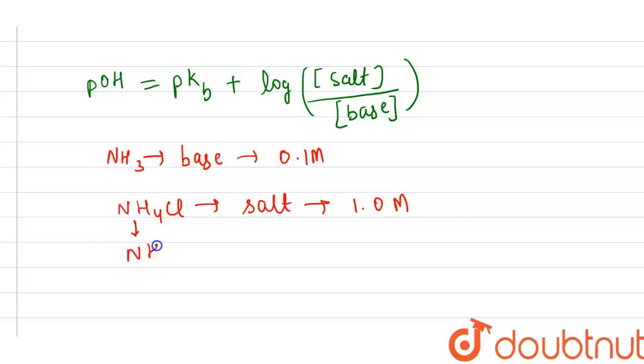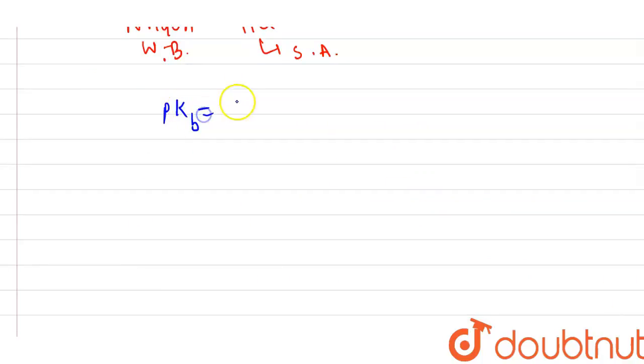As we know, it is a salt and its value is 1 molar. It is a salt of ammonium hydroxide, which is a weak base, and HCl, which is a strong acid. Now, we have given pKb of ammonium hydroxide - pKb equals 5. Let us substitute all these values in this equation: pOH equals pKb plus log of concentration of salt over concentration of base.